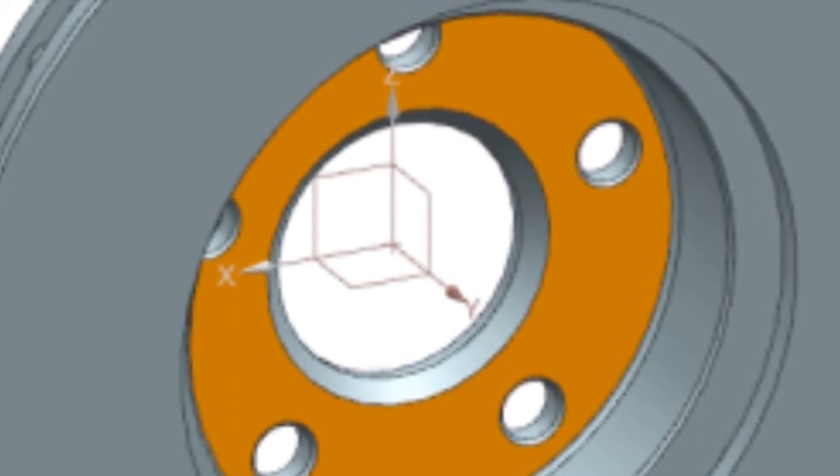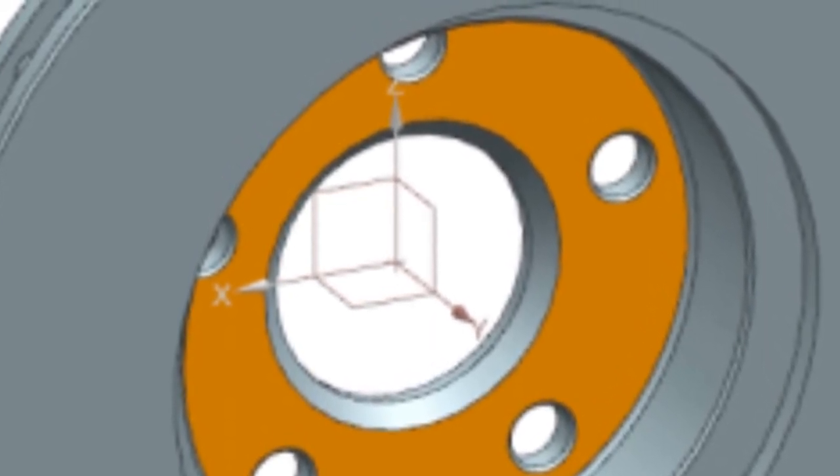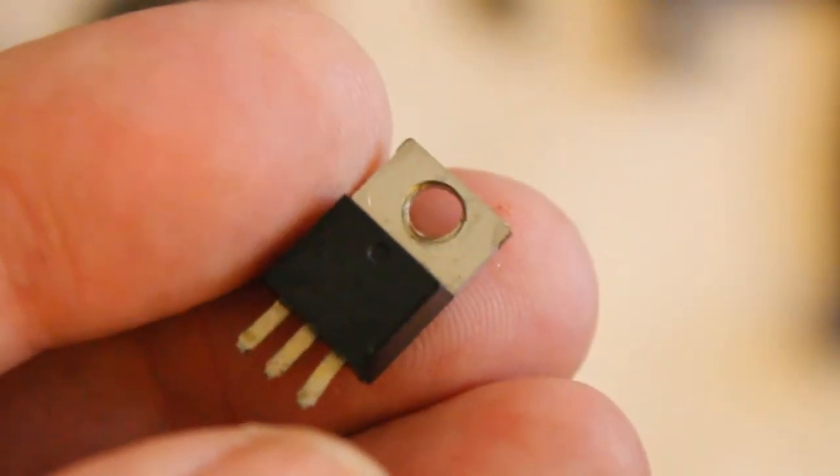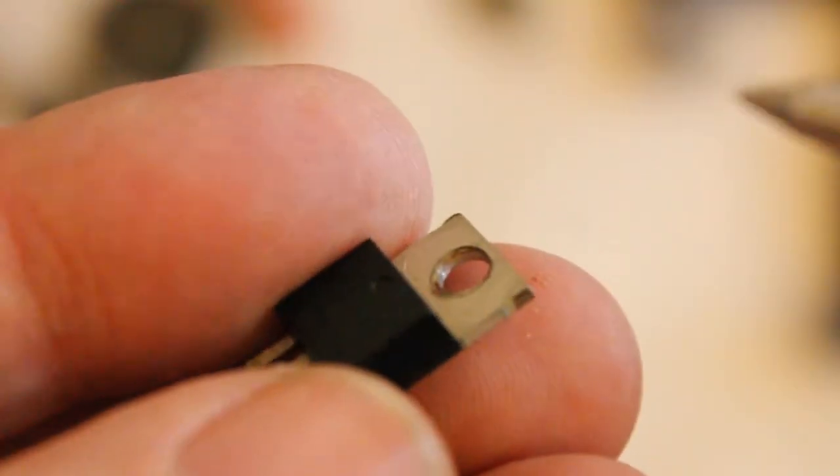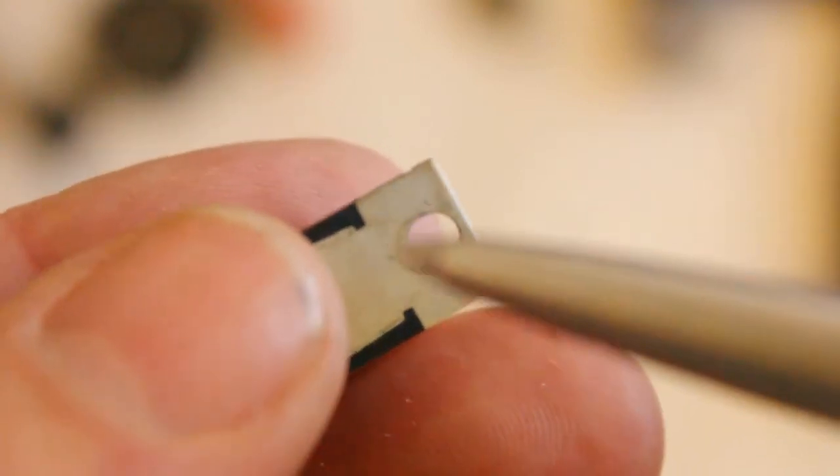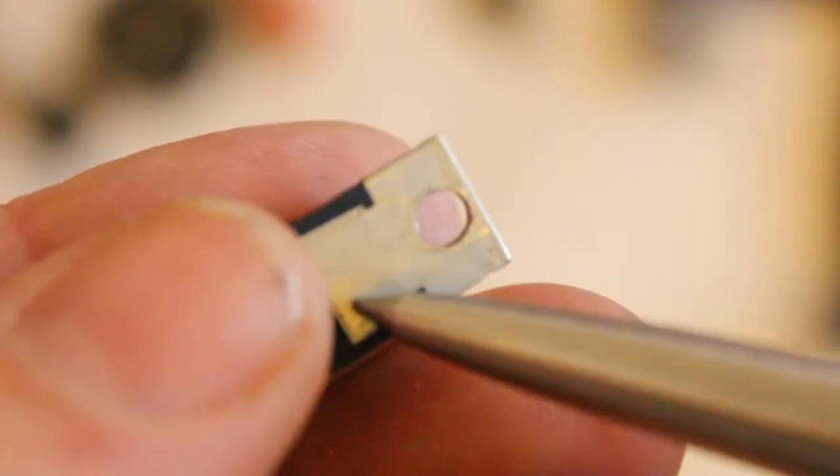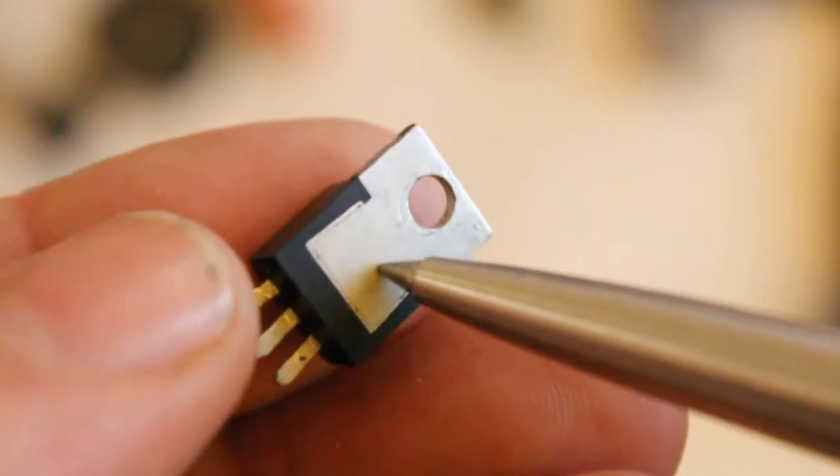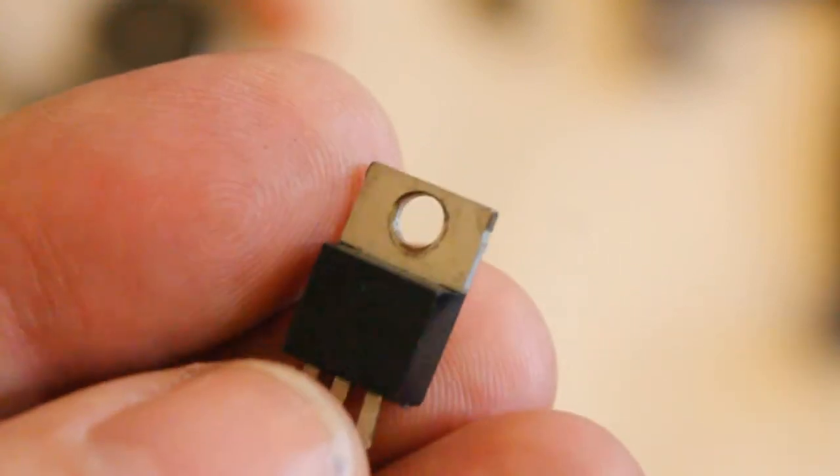Functionally, it makes sense to design parts starting from mating surfaces. For example, look at this power transistor from the cordless drill. Because it mounts flat on this surface that also removes heat, it's logical that we design the part with one plane of the datum coordinate system coincident with this face.